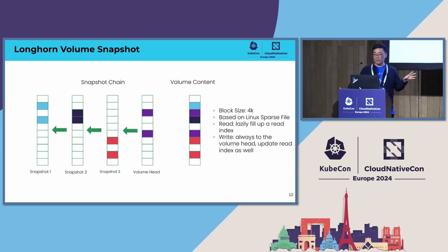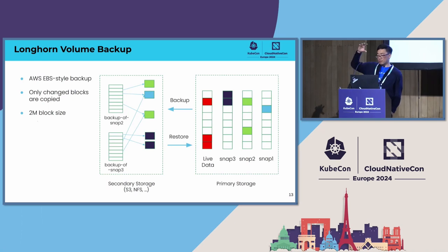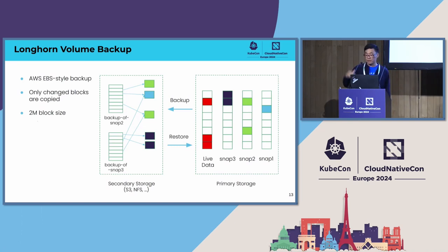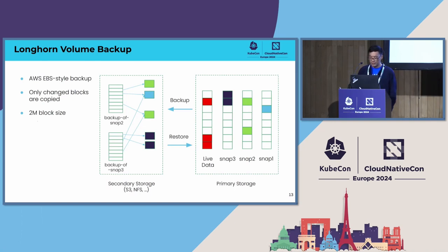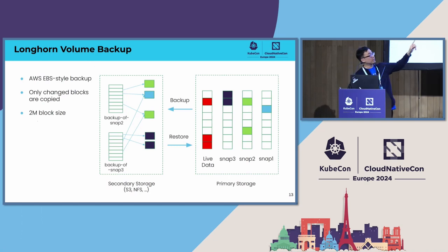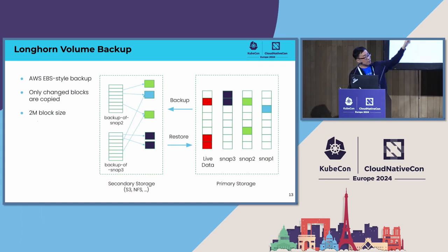The mechanism is based on sparse files for V1, and for V2 SPDK, there is a logical volume to support that as well. For backup — backup is based on snapshots, but we use reference counting to make sure no unused data is still backed up on the remote backup target. For example, if we back up snapshot 2 and snapshot 3, there will be no duplicate data — reference counts track which backup references which block of data, so snapshot 2 references that block without duplication.